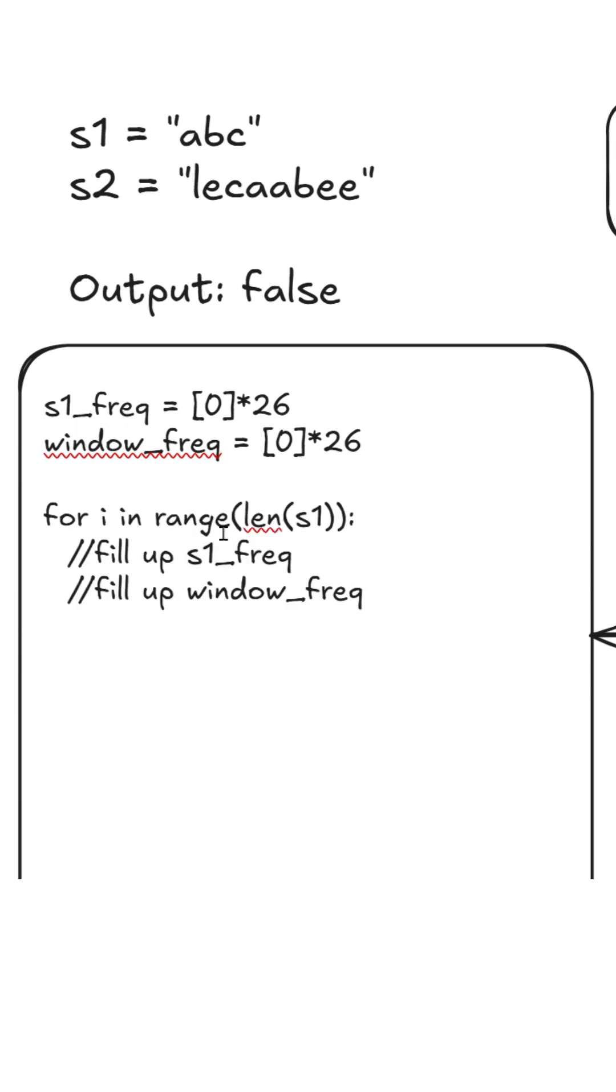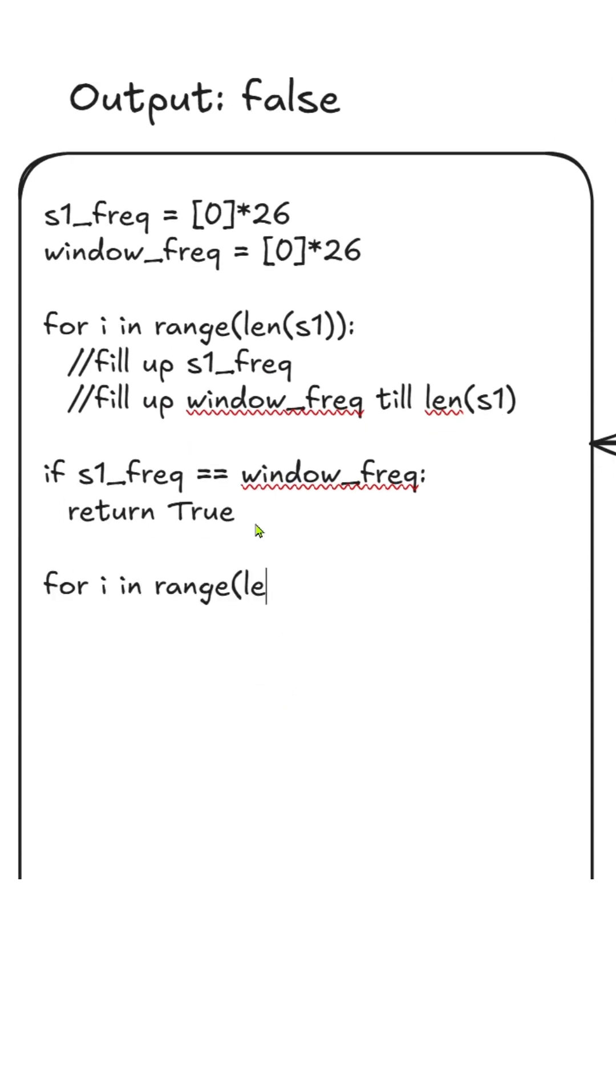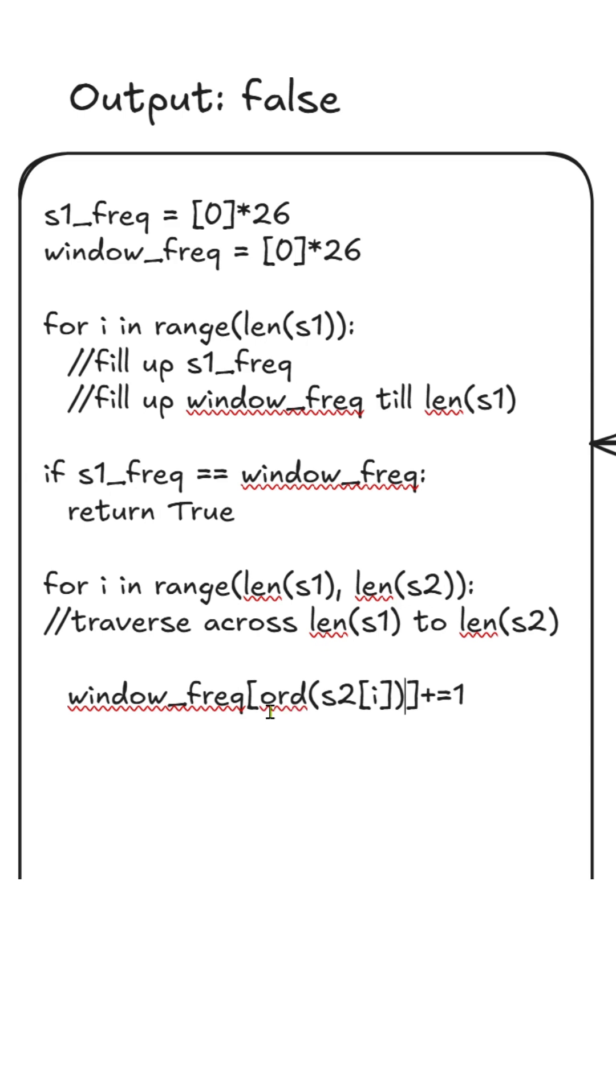We fill up these frequency mappings up to the length of s1. Check for equality. If at all it is not equal, we proceed with the next step that is we go across filling it for the next set of window frequency.